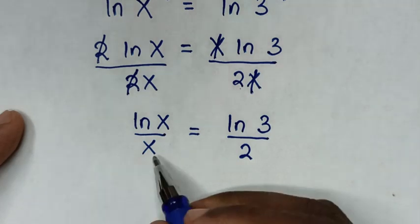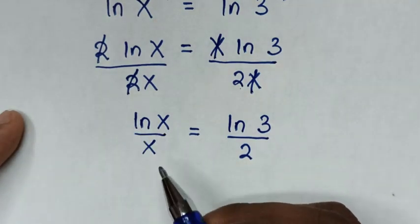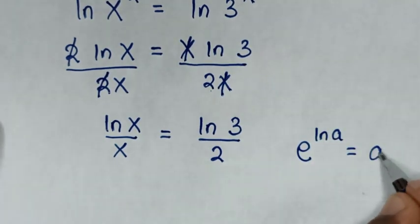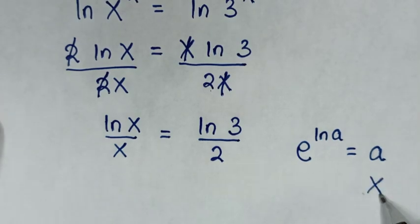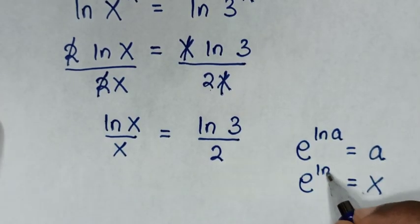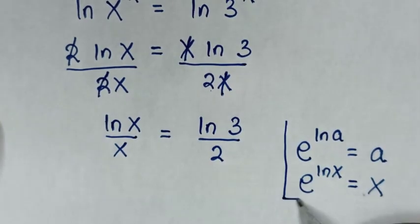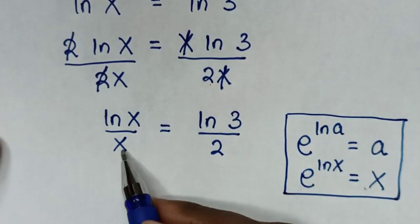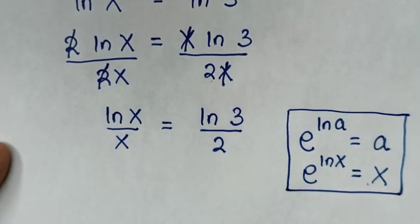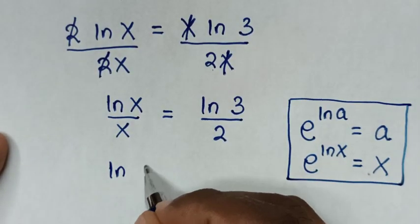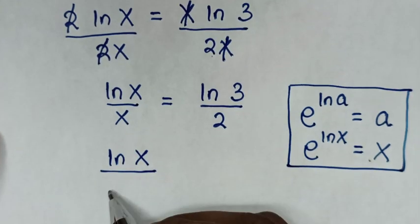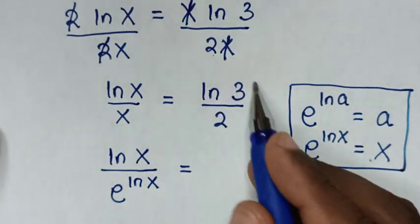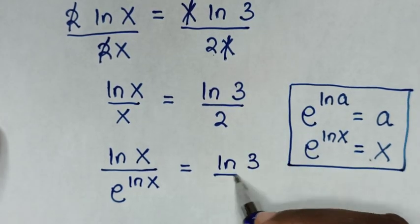Then in the next step, to handle the x inside ln(x), we apply the rule that e to the power of ln(a) is equal to a. So x will be equal to e to the power of ln(x). Substituting, it will be ln(x) over e to the power of ln(x) is equal to ln(3)/2.